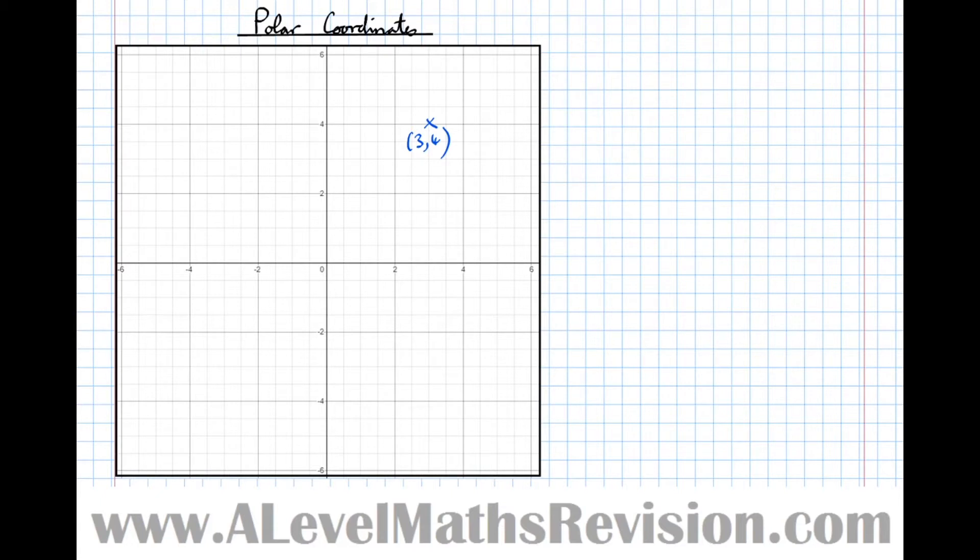Polar coordinates, however, define the point using a different piece of information. They use the angle from the positive x-axis and the distance from the origin. That's the two pieces of information to define a point.